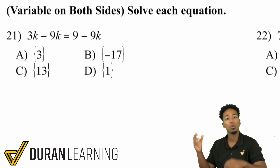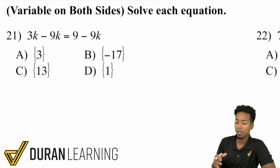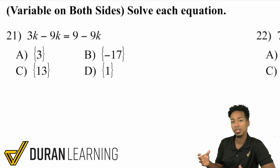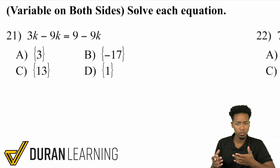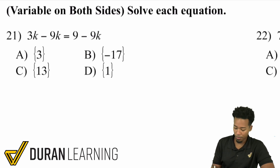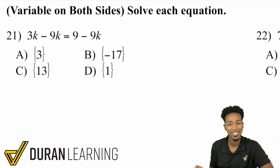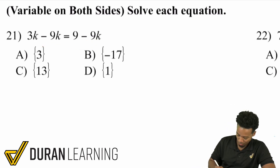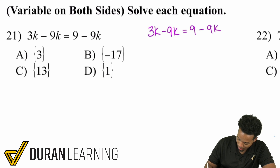I'm going to show you how to walk through these nice and easy, where you have variables on both sides. The reason I'm making a video on this by itself is because typically we are able to map out what's going on and just work backwards. But in this case, notice how do we work backwards when we have variables everywhere? So here's what we're going to do. I'm going to rewrite this: 3k minus 9k equals 9 minus 9k.